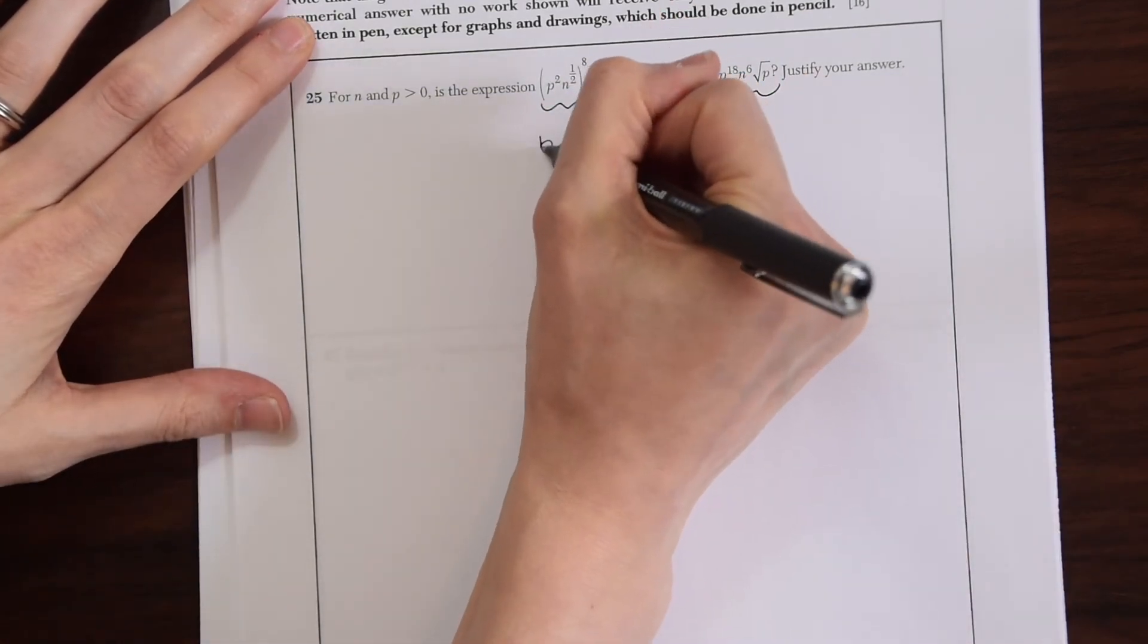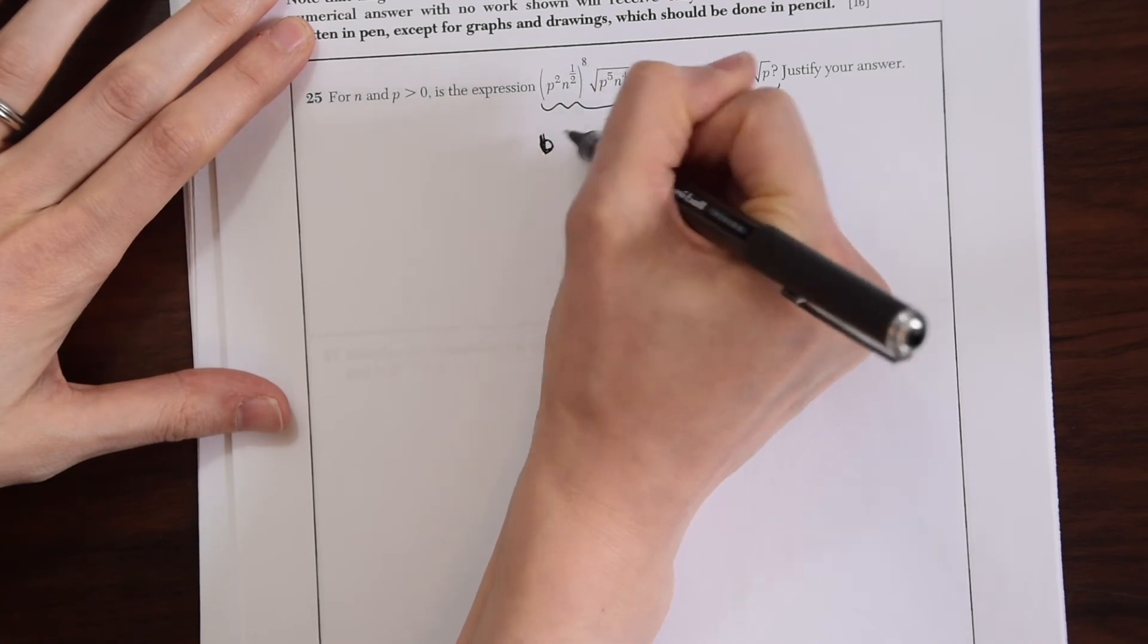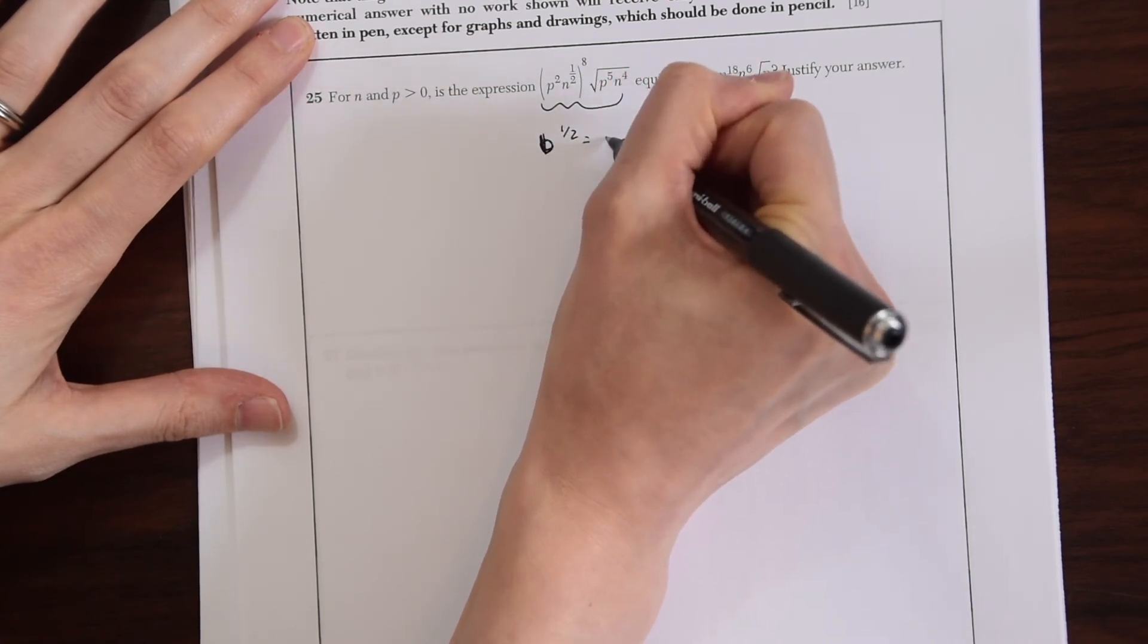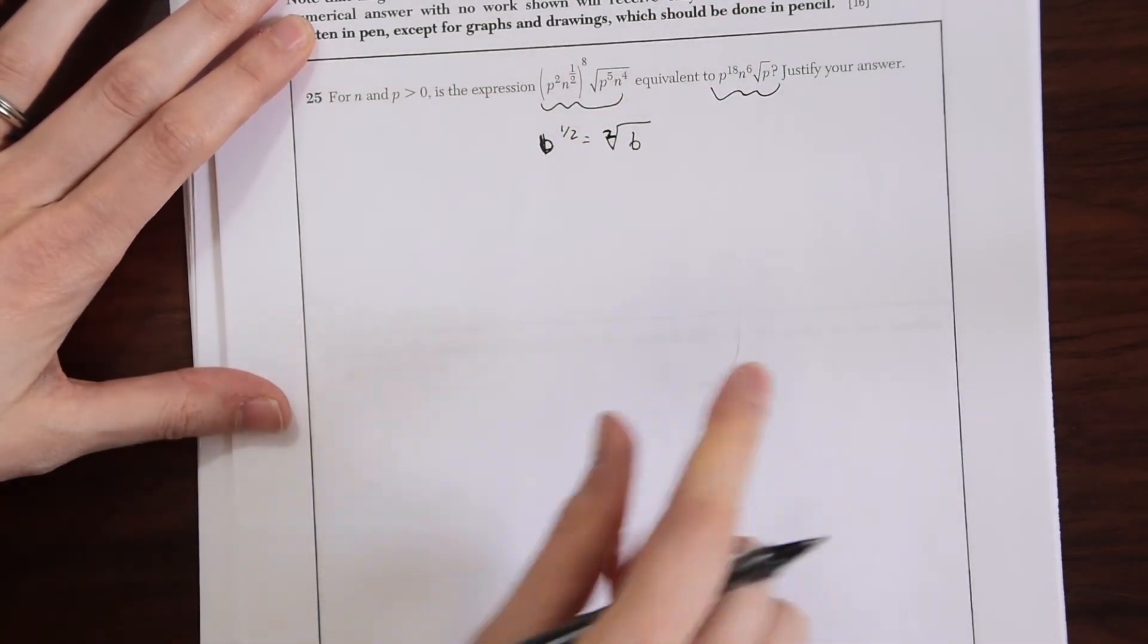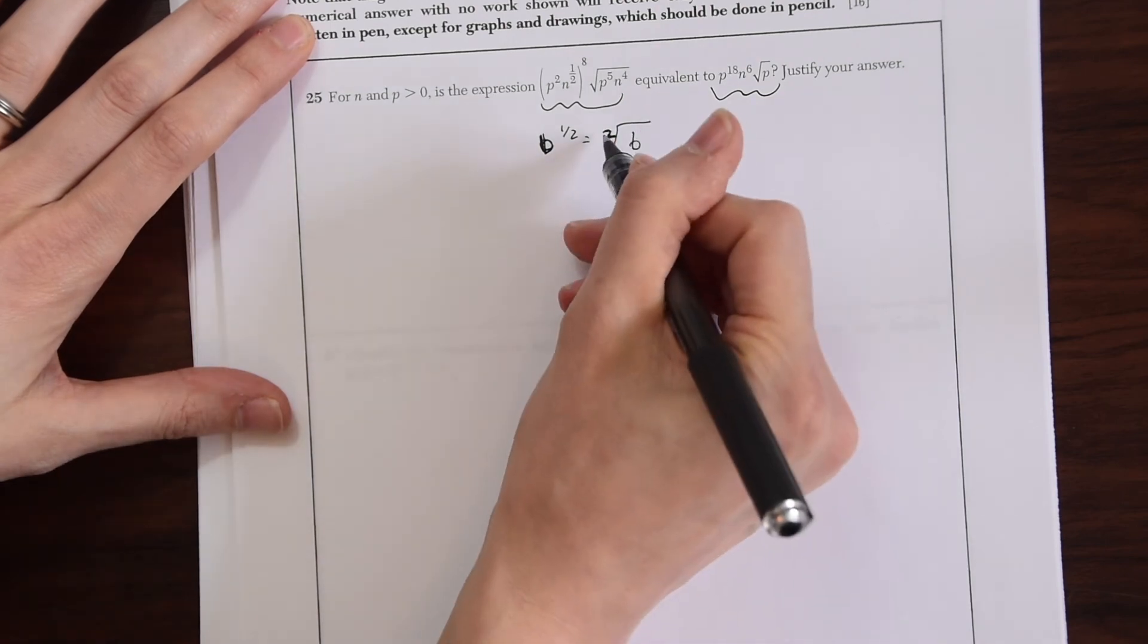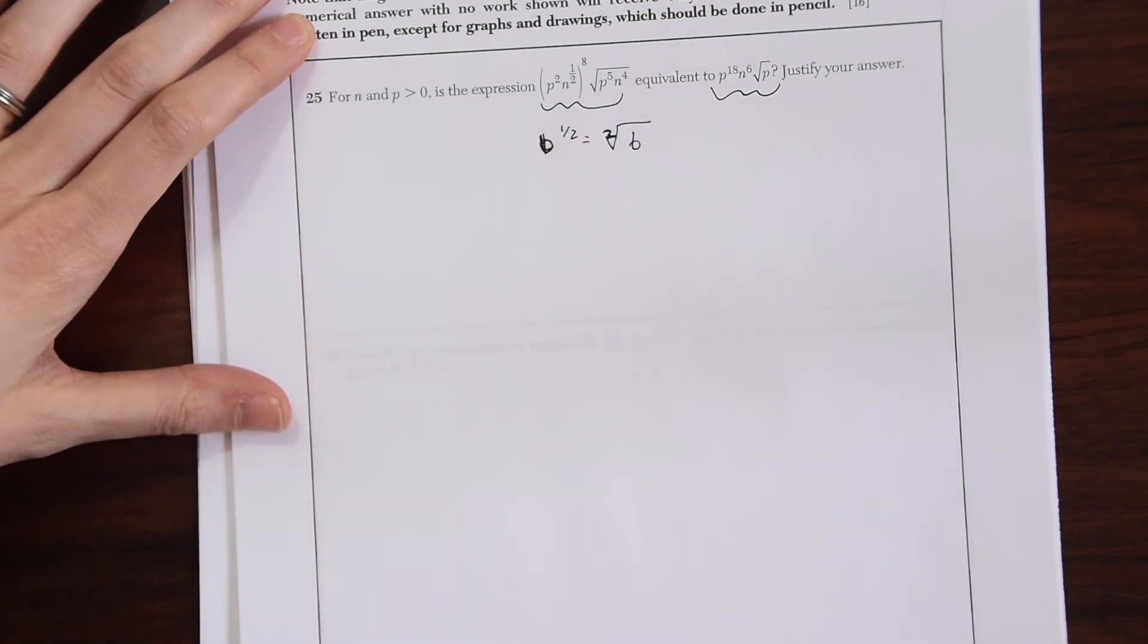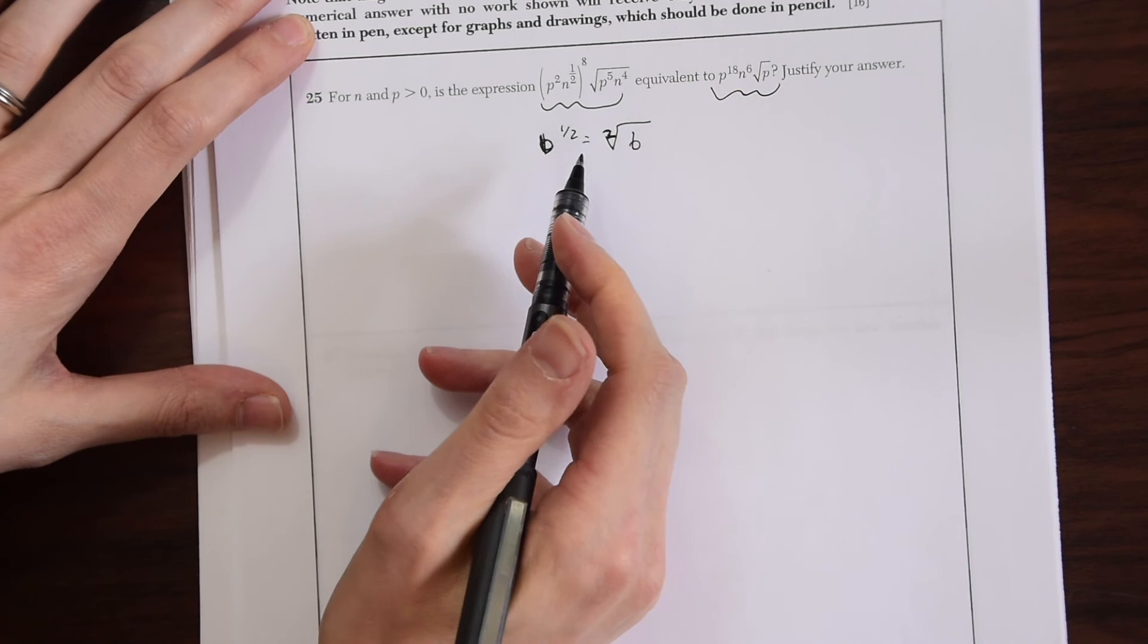If we know that b to the one half is equal to radical b we'll be able to answer this question. And whenever you take the radical of something, the square root of something, it always has a secret little two there. So knowing that let's answer this question.